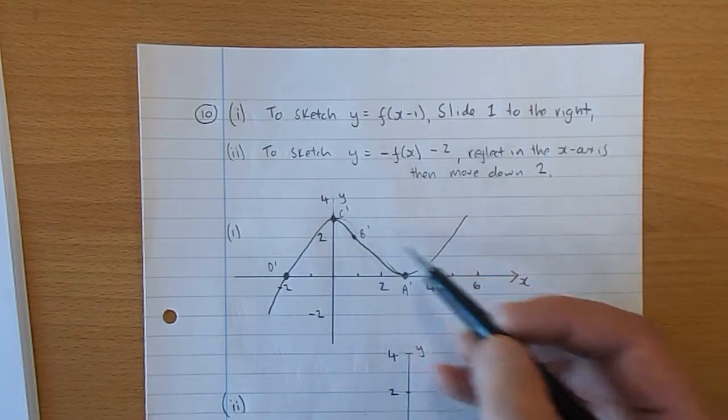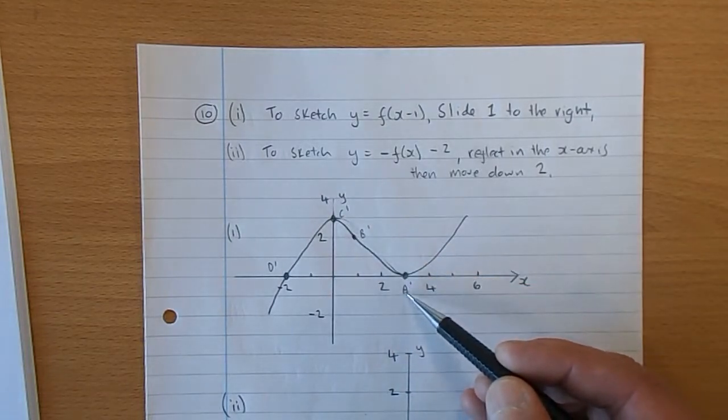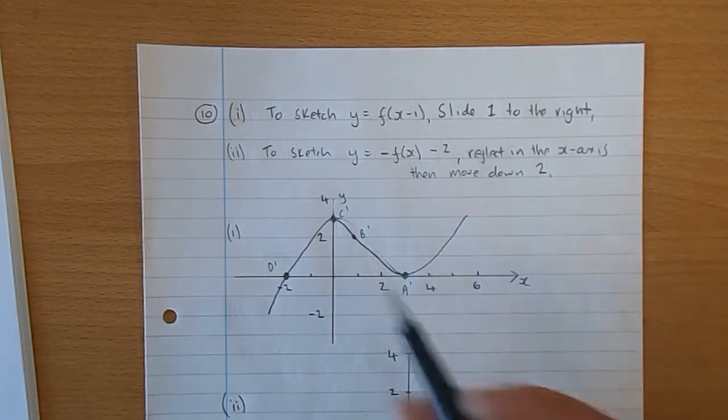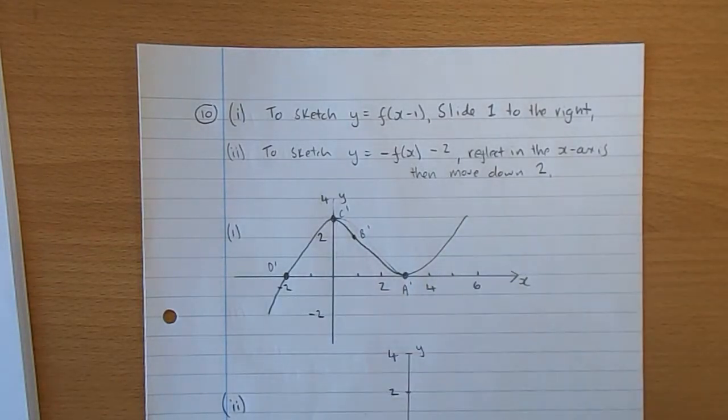Incidentally, the image of a point a would be, for instance, it would be a with a wee dash there. That's what we call the image of a. The image of c would be on the y-axis.